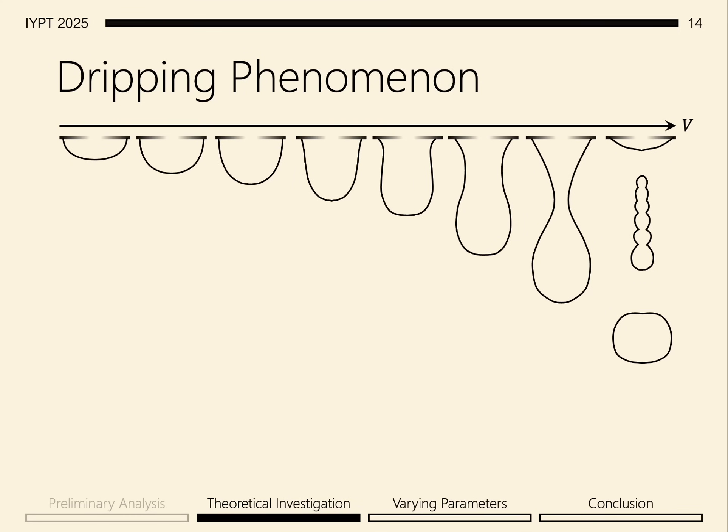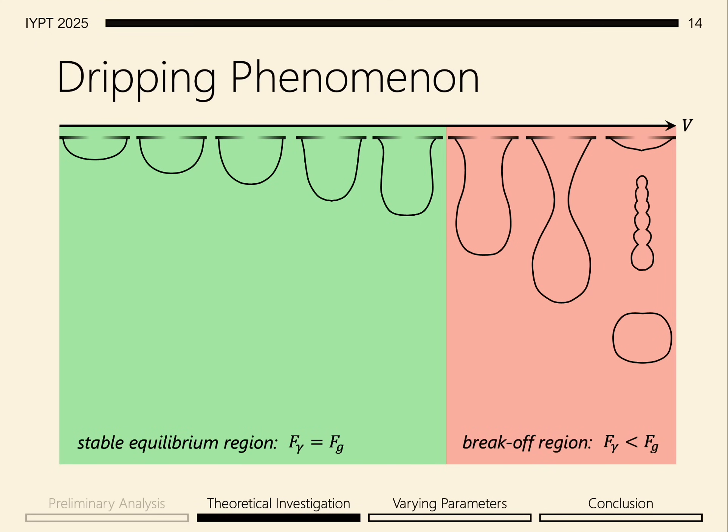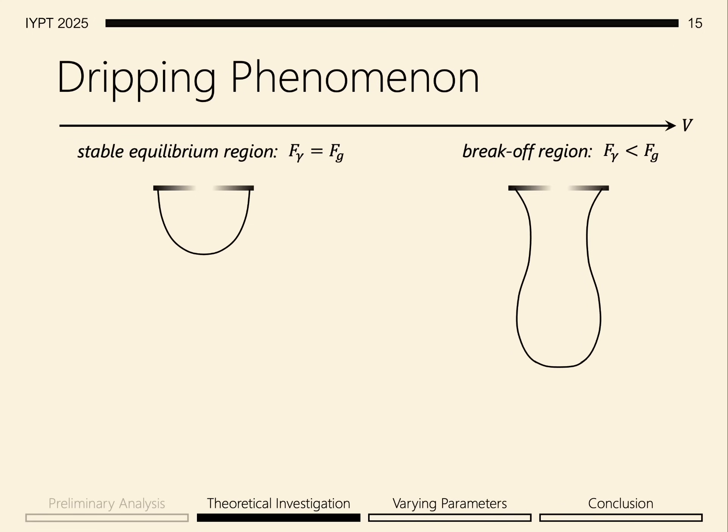For a very simplified explanation, looking at the profile of droplets as the volume increases, we split the progression into two regions: the stable equilibrium region and the break-off region. In the stable equilibrium region, the force of gravity can be balanced by surface tension. However, in the break-off region, the force of gravity can no longer be balanced by surface tension. Notice that the net force on the stable equilibrium region is zero, whereas the net force on the break-off region is downwards, and the drop begins to break off.